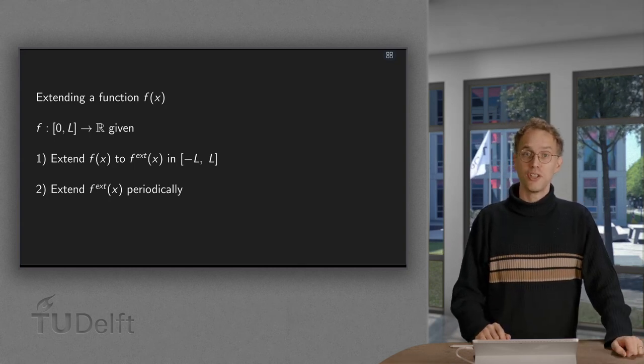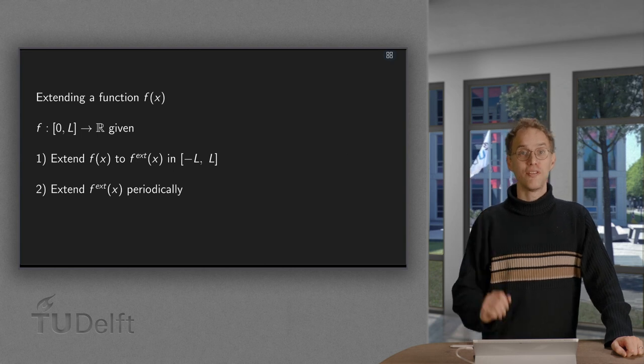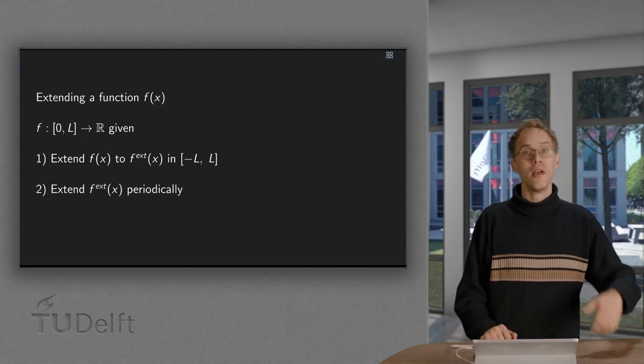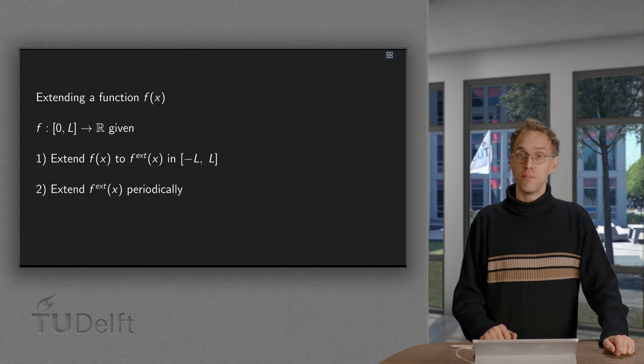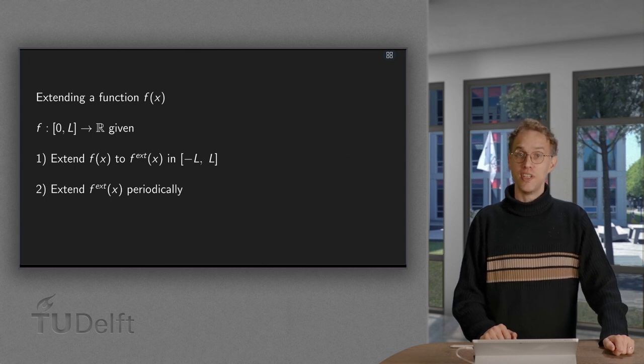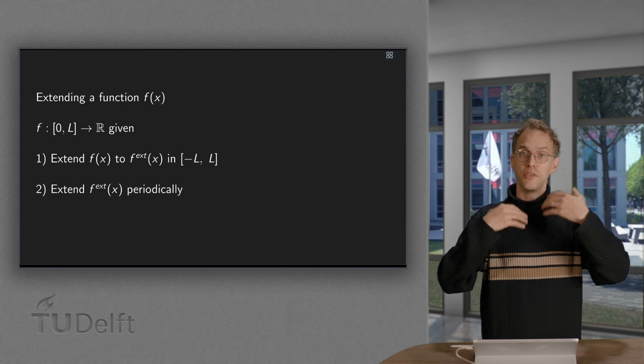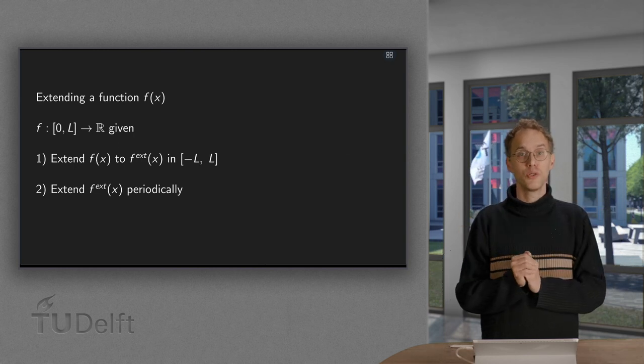Can we find the Fourier series of a function which is only given between 0 and L? For a Fourier series we need a periodic function given between minus L and L, and then continue it periodically with period 2L.